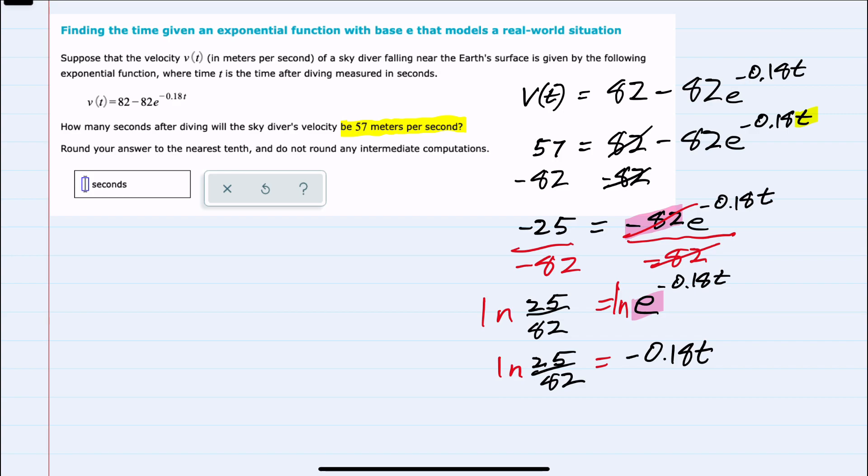And I can continue to solve for t by dividing both sides by negative 0.18. This cancels, leaving me just the t on the right-hand side.